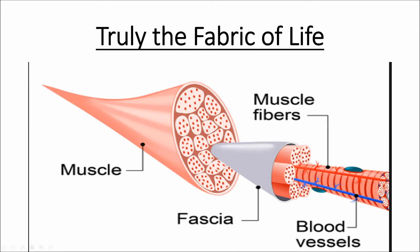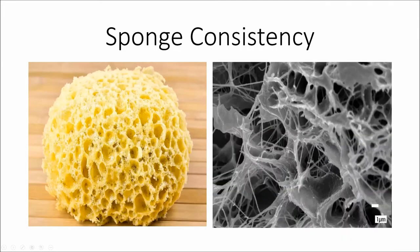Let's talk about the consistency of fascia. On the left you see a natural ocean sponge sitting out on a counter, dried up. On the right is an image of fascial tissue magnified to show its consistency, looking very much like the sponge. What happens when you leave a sponge out overnight and pick it up the next morning? It's stiff, tight, won't bend, not flexible, not pliable, brittle — it might break or tear. And we are just like that.